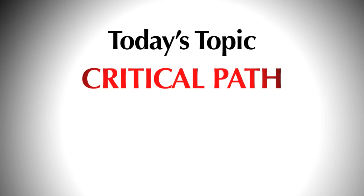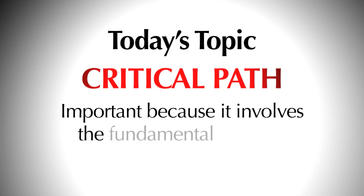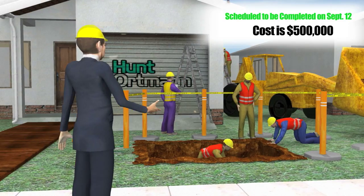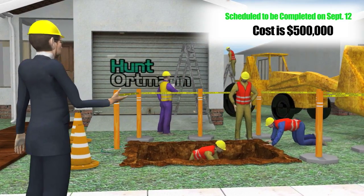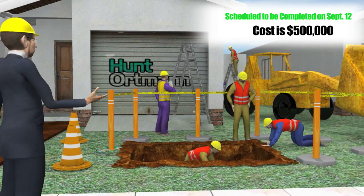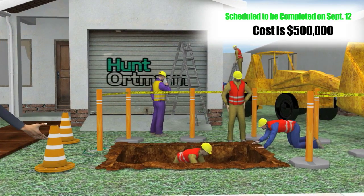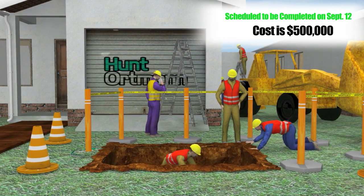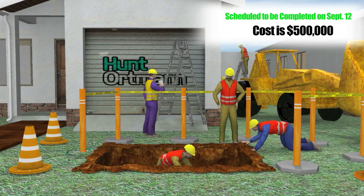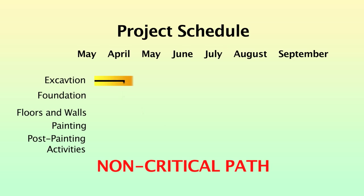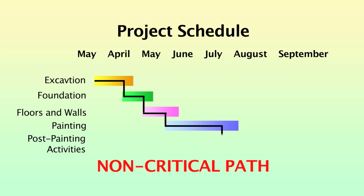Critical path is important because it involves the fundamental concept of time is money. In this scene, you see some figures hard at work on a construction project. Although the painter is lazing about, his behavior is not affecting the other workers. The work key to finishing the project is proceeding. The cost impact, if any, is minimal, and the overall schedule is unaffected.